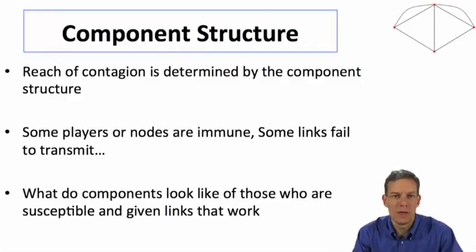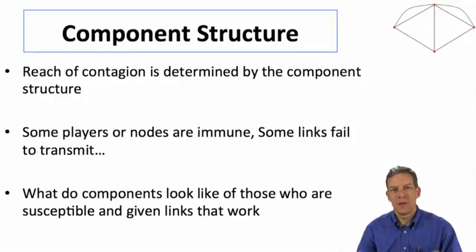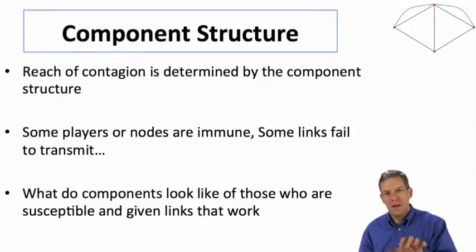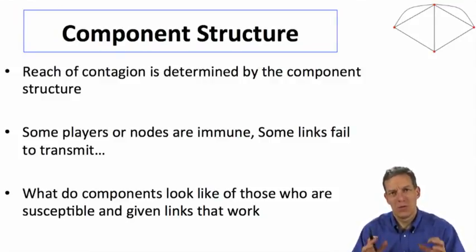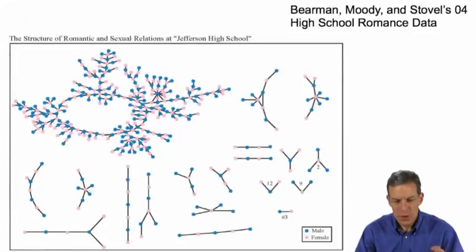An important part of this is going to be understanding what the component structure is. The reach of the contagion is going to be determined by the component structure, where what we think of is links being put down probabilistically according to whether or not two individuals would actually transmit from one to another. It's possible that some nodes or players are going to be immune, links might fail. So what we're going to look at is what do the components look like if only we consider the nodes that are susceptible and links that are actually going to transmit.